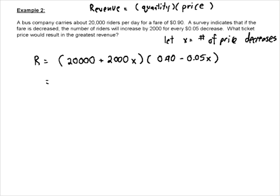Let's just multiply this out. So we're going to go 20,000, and we're going to multiply that by 0.9, which is going to give us 18,000 minus 20,000 times 0.05, minus 1,000 times 0.05 is 1,000x plus 1,800x minus 100x².